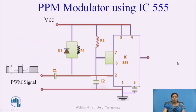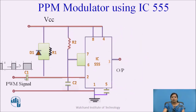In the PPM modulator circuit diagram, again there are two parts: a differentiator circuit and an IC555 circuit. Here, the control voltage is connected to the main capacitor which is connected to ground. The input to this circuit is only the PWM signal, which is given to the differentiator. The differentiator consists of R1 and C1, with R1 connected to VCC. When the train of pulses is given to the differentiator, it generates negative spikes — the negative trigger — which are applied to pin number 2 of IC555. The output is at pin number 3.